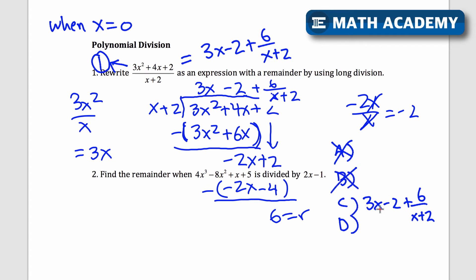Let's try choice C. If I plug in 0 for x, 3 times 0, that's 0, minus 2. So this just becomes 0, minus 2 plus 6 over 2. 6 over 2 is plus 3. Negative 2 plus 3, that equals 1. I got the same thing for choice C. So that'll be the answer.